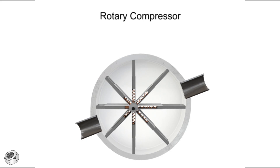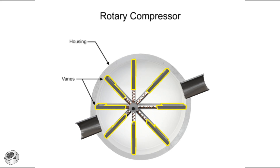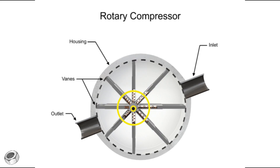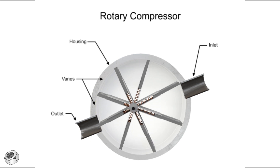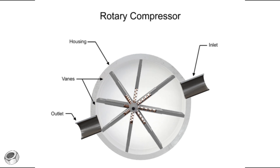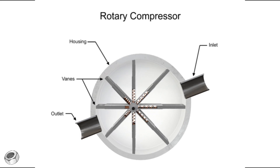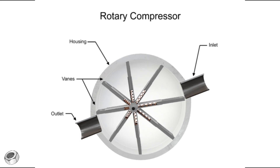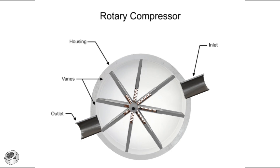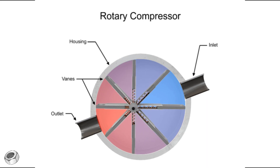Rotary compressors typically consist of a cylindrical housing with adjustable rotary vanes, an inlet, and an outlet. The vanes are on an off-center drive shaft. As the shaft rotates, the vanes slide in and out to maintain contact with the cylindrical compressor wall, creating chambers within the cylinder of varying sizes.